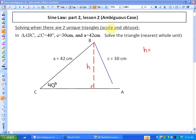So solving when there are two unique triangles, acute and obtuse. In triangle ABC, angle C is 40 degrees, c is 30 centimeters, and side a is 42 centimeters. It says solve the triangle to the nearest whole unit.